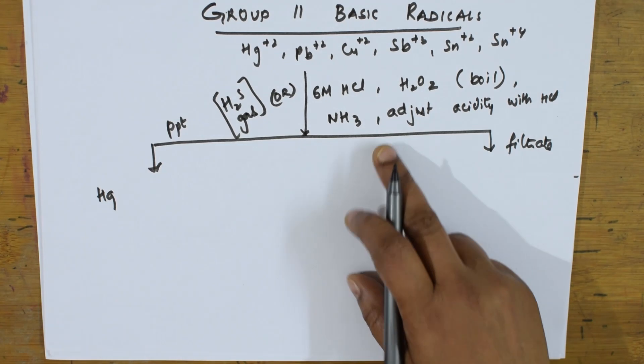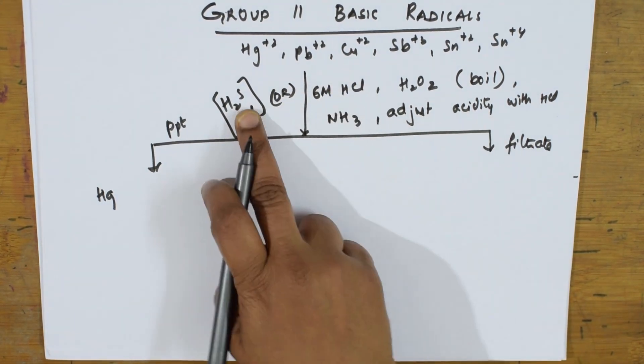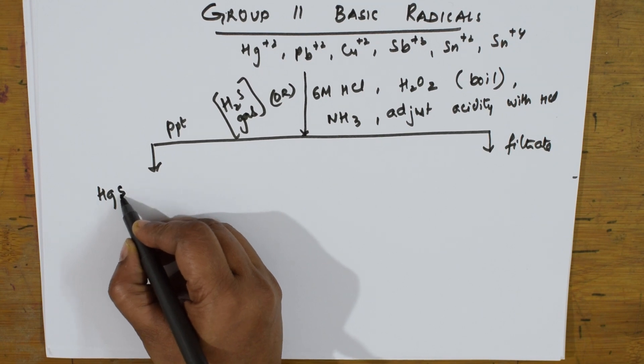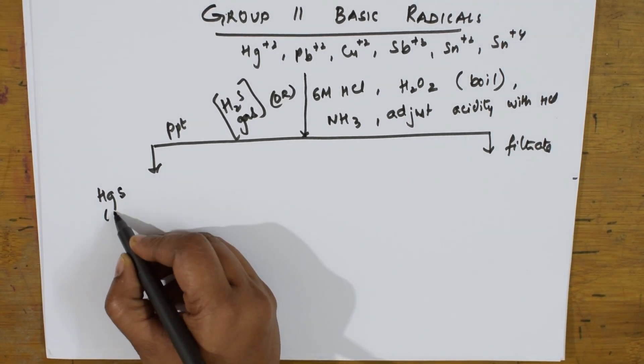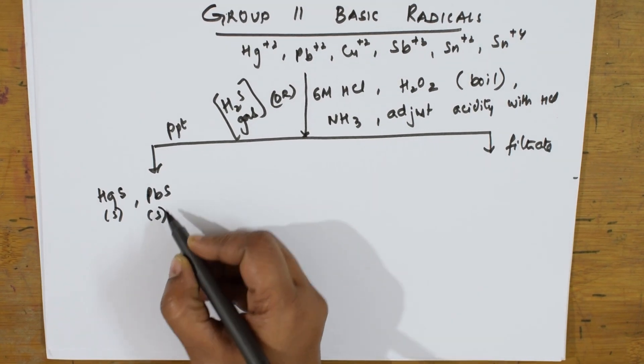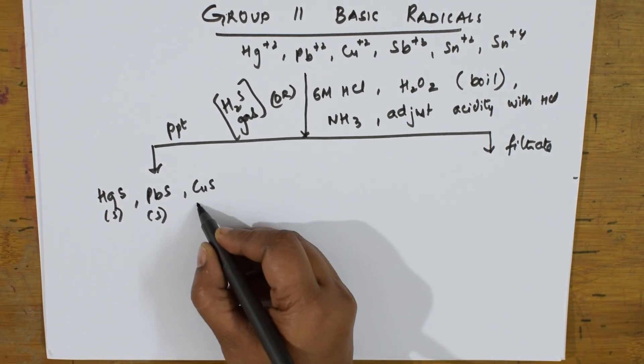If you don't want this, HCl is there and H₂S also. Then they will precipitate as HgS which is a solid, PbS which is a solid, and copper sulfide which is a solid.